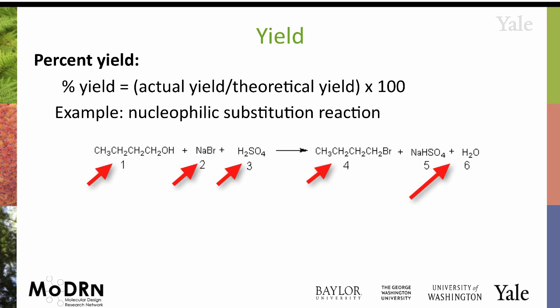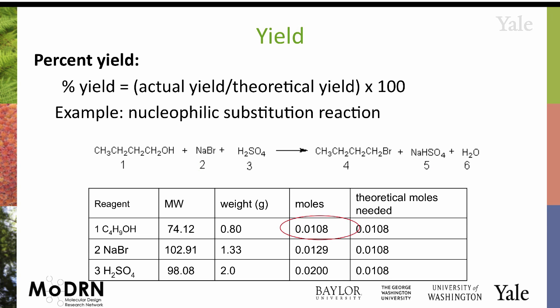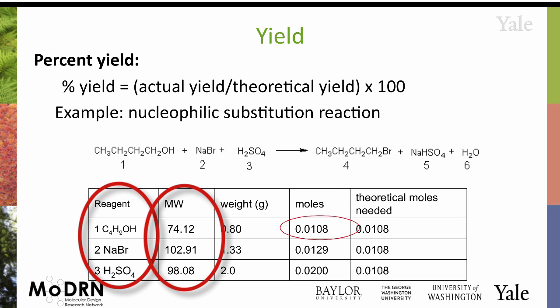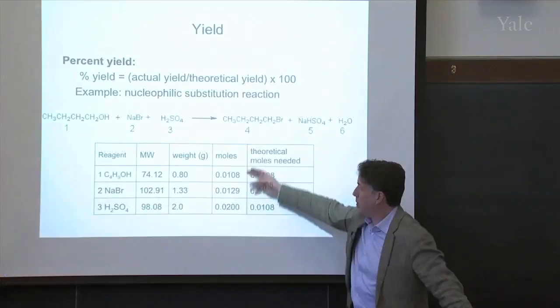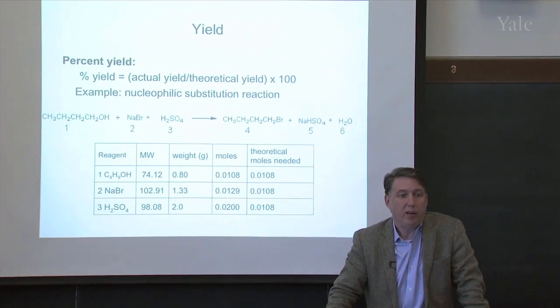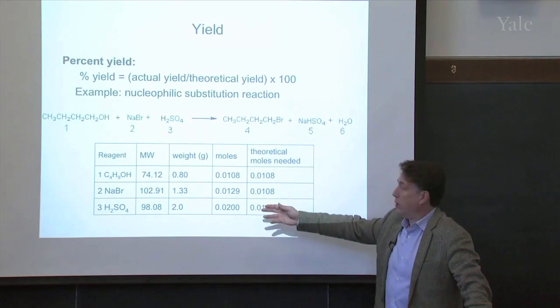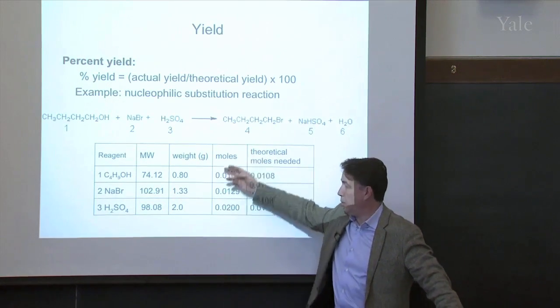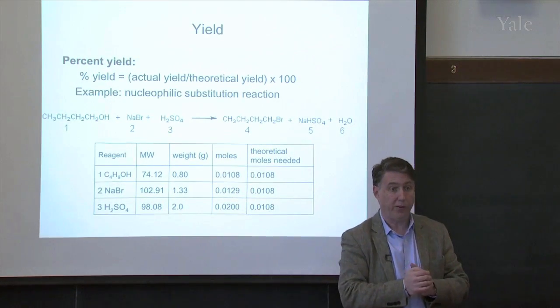So what do you do? You look at all of the different feedstocks going in, you look at the molecular weights, you look at the actual weight that you have, and you come up with your number of moles. What do you have to do to determine what is the limiting reagent? You look at which one of these you are essentially going to run out of first.